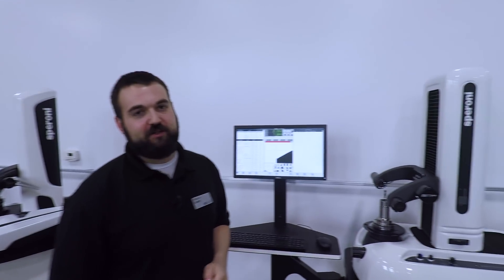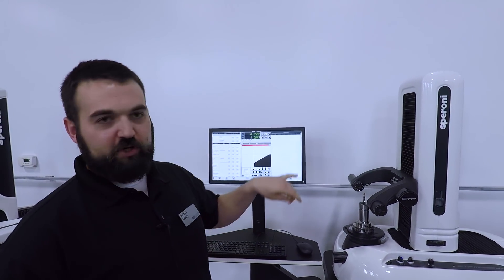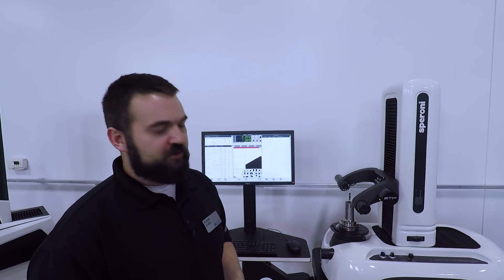So we are here with Patrick Crady. Thanks for having us, Patrick. Walk us through. This is a Speroni tool pre-setter. This model specifically is the Magus. Right now we're working on a Magus 500, so that means we're at a 500 millimeter column height. So a little over 20 inches or so? Yeah, roughly, right around 20 inches there.